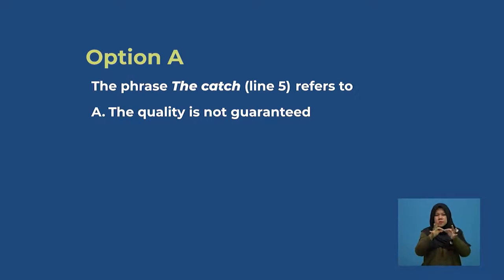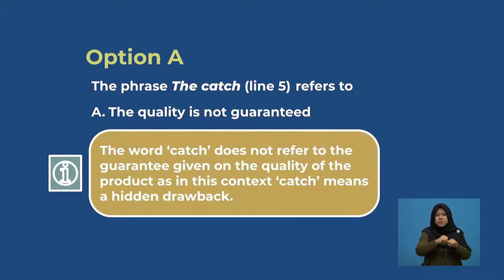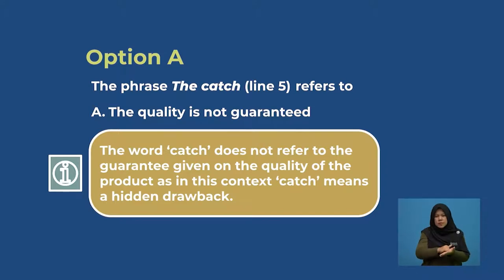Let's look at option A. The phrase 'the catch,' line five, refers to A, the quality is not guaranteed. If you look closely, the word catch does not refer to the guarantee given on the quality of the product, as in this context 'catch' means a hidden drawback. Therefore, option A cannot be accepted.